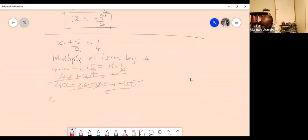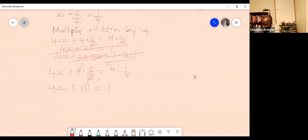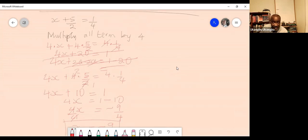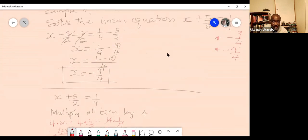All right. This should have been 4x plus 4 times 5 over 2 equal to 4 times 1 over 4. So this crosses out. So you have 10 here. You have 10 here. And you have 1 here. And you have 4x here. All right. So then transfer 10 to the right side. So that's going to give you 1 minus 10 equal to 4x. Then divide both sides by 4. That's going to give you 4x over 4 equal to 1 minus 10 is negative 9. Then divide it by 4. So 4 cancels out 4, and you are left with x equal to negative 9 over 4, which gives us the same solution.